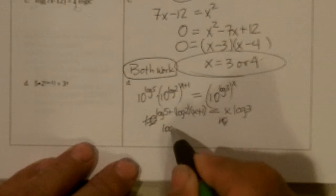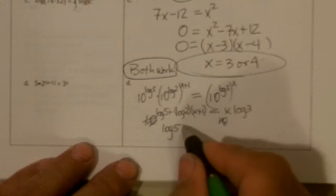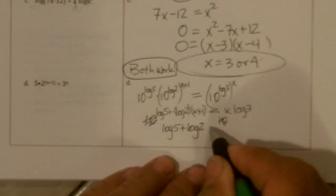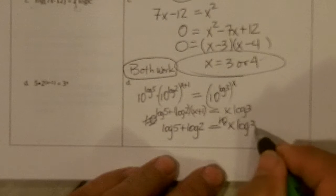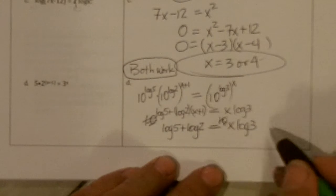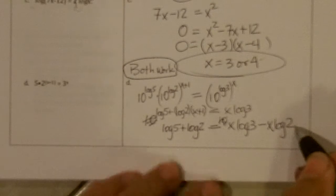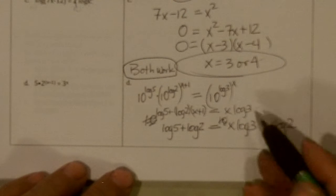And so I'm going to have log 5, log 2 times 1 is plus log 2 equals x log 3, and then I'm subtracting a x log 2. And now I can factor out the x.